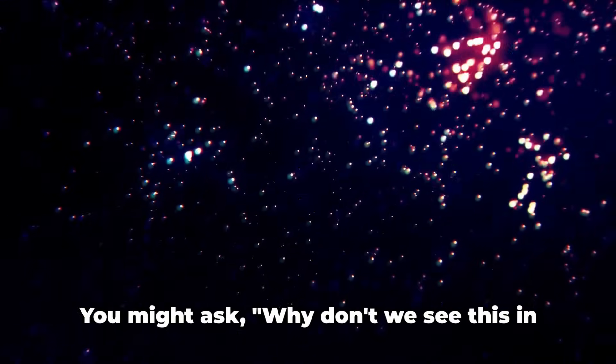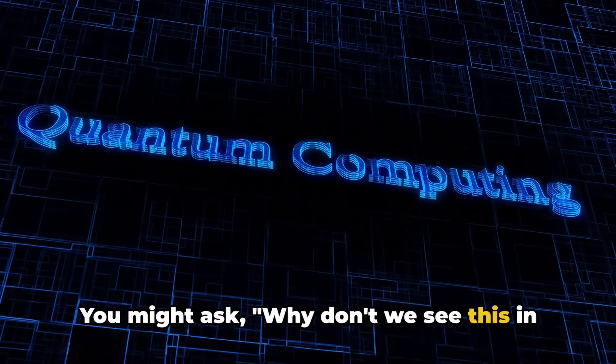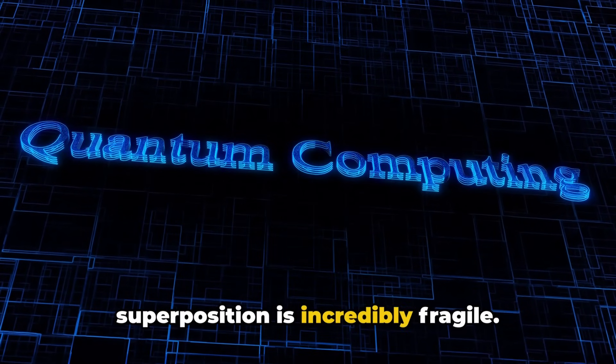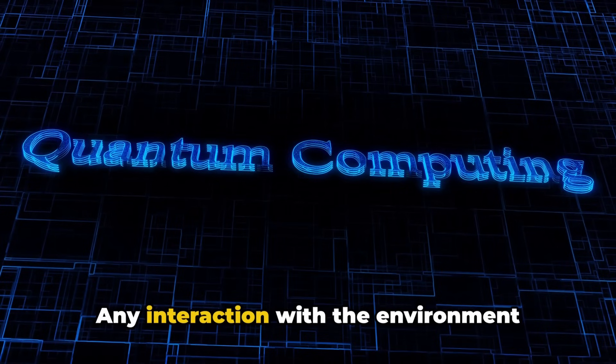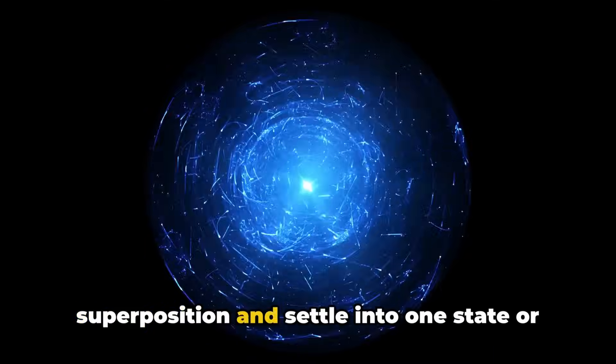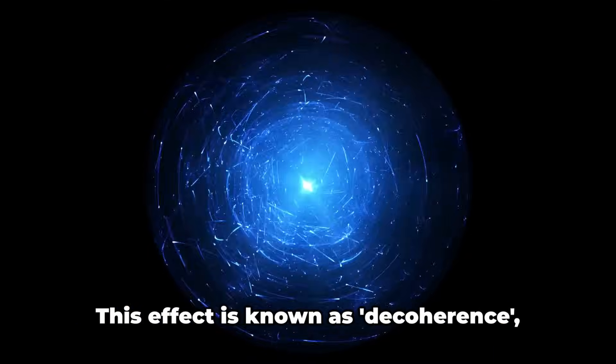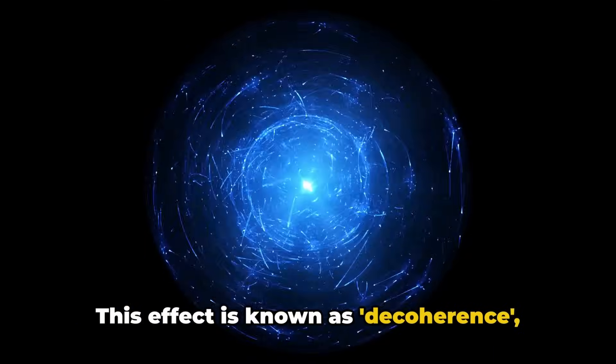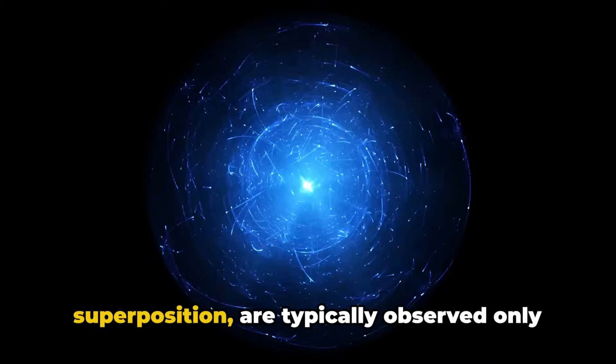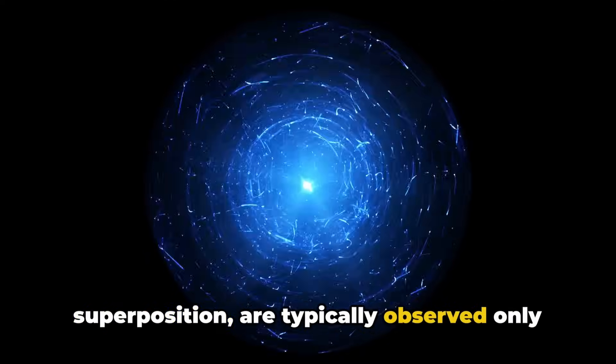You might ask, why don't we see this in our daily lives? Well, that's because superposition is incredibly fragile. Any interaction with the environment causes a quantum system to lose its superposition and settle into one state or the other. This effect is known as decoherence, and it's why quantum phenomena like superposition are typically observed only at microscopic scales.